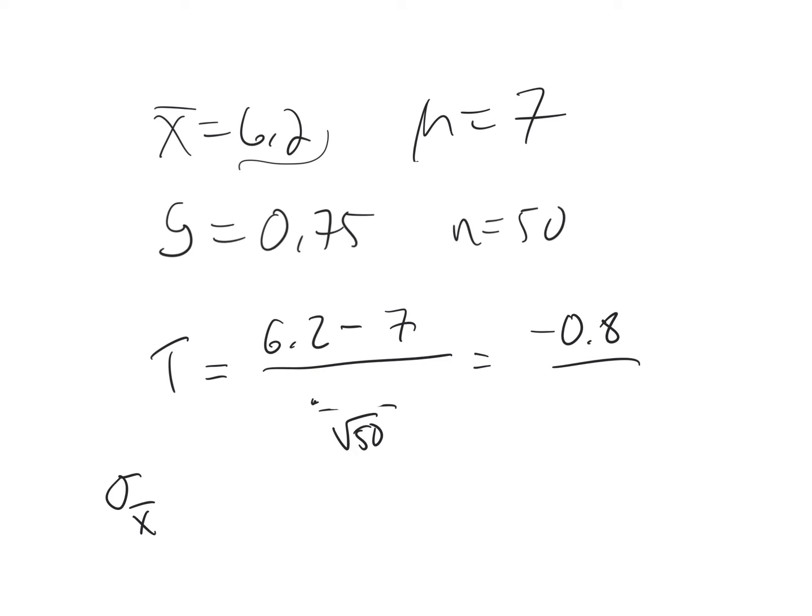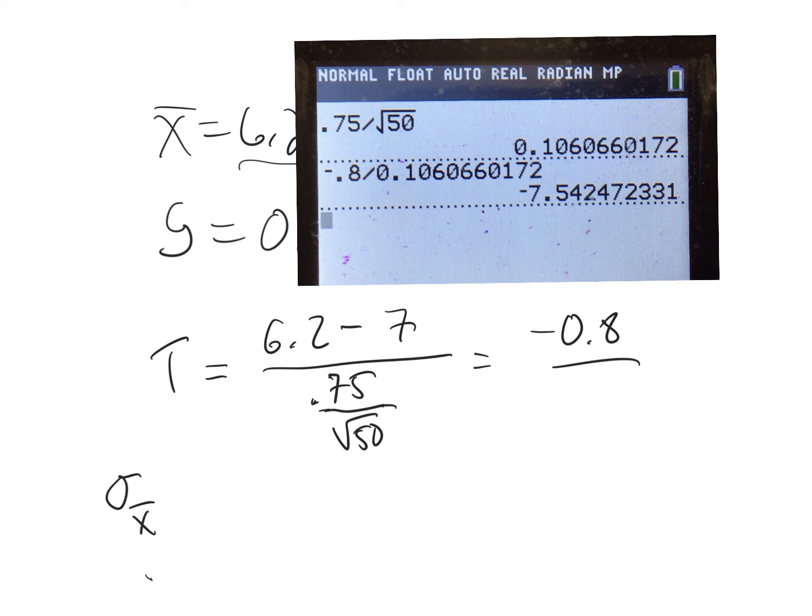I just noticed that I made a mistake before I crunch this. I wrote the wrong standard deviation, the standard deviation is 0.75. That's corrected. To do this on my calculator, let me get a pointer going. Once I got that correction, 0.75 divided by the square root of 50.